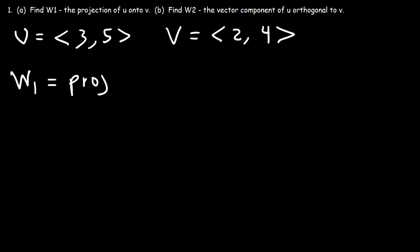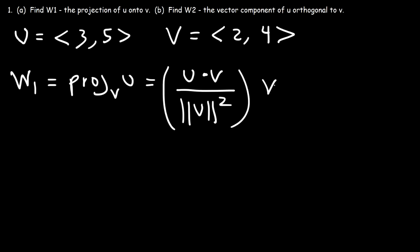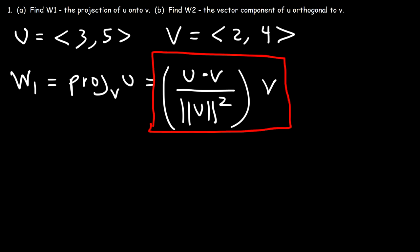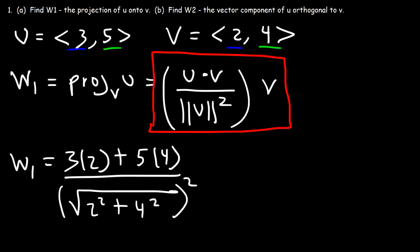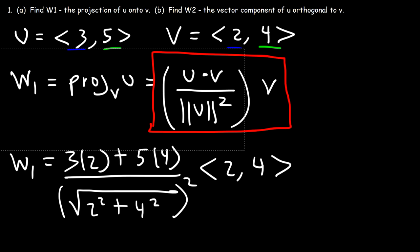Here's the formula: w1, which is the projection of u onto v, is equal to the dot product of u and v divided by the square of the magnitude of vector v, times v. So the dot product of u and v — we multiply the x components together, so that's 3 times 2, and then multiply the y components together, so that's 5 times 4. The magnitude of vector v is the sum of the squares of the x and y components within a square root, but since that is squared, the square cancels the square root, and then we multiply by vector v, which is (2, 4).